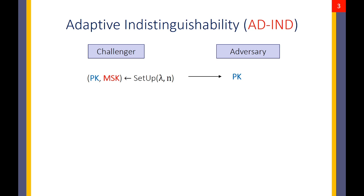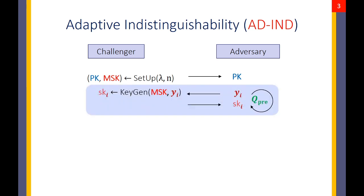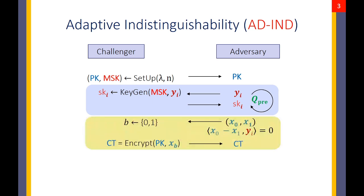We start with the adaptive indistinguishability definition, which assumes the usual game between a challenger and an adversary. The game starts with the challenger generating a key pair and sending the public parameters to the adversary. In the pre-challenge phase, the adversary makes key queries for key vectors yi, and the challenger replies with the corresponding functional decryption keys. In the challenge phase, the adversary outputs two messages x0 and x1, and the challenger encrypts one chosen at random. The messages are chosen so that they decrypt to the same value under any pre-challenge key, making it impossible for the adversary to trivially win.